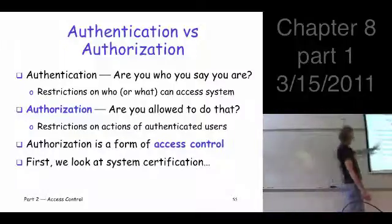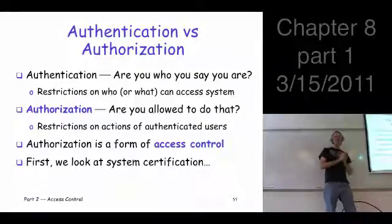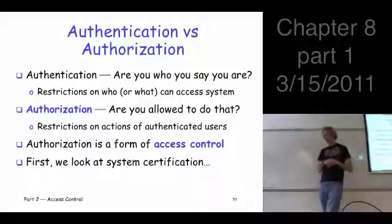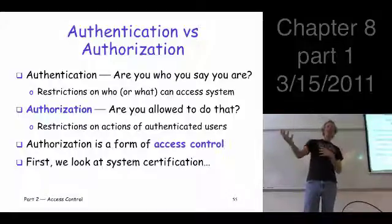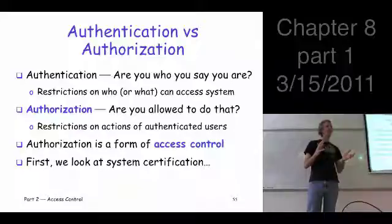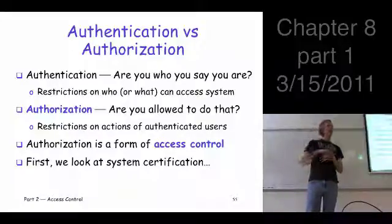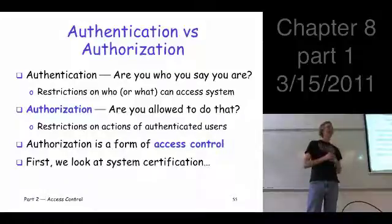This is a form of access control — restrictions on what users can do, who's allowed to access what. We'll also talk about a topic called covert channels. There's also a topic I really wanted to cover here called system certification, which deals with something the U.S. government has promoted for a long time — and other governments have gotten into more recently. They try to set up ways that you can get a product certified so you can have some level of confidence that it does certain things correctly. That's related to authorization, but it doesn't neatly fit anywhere in this chapter.